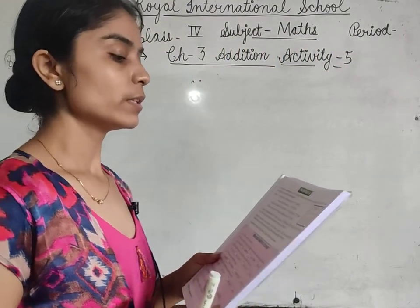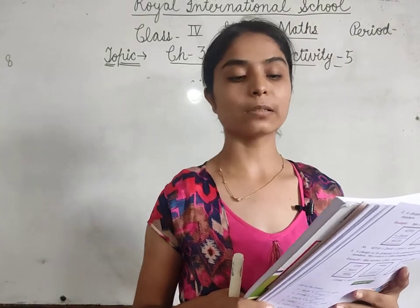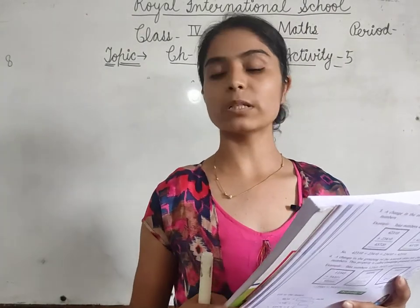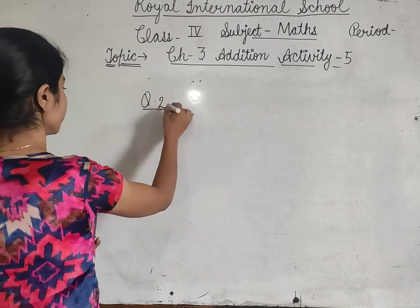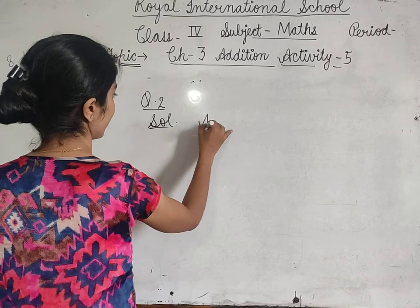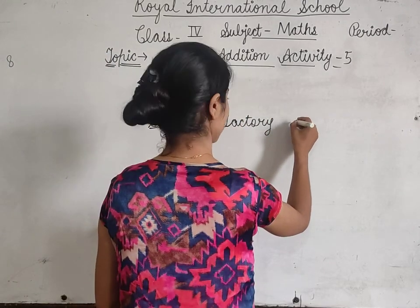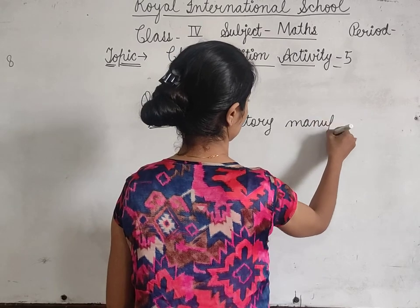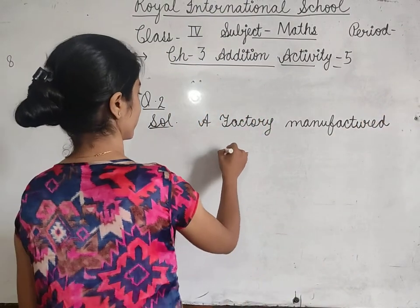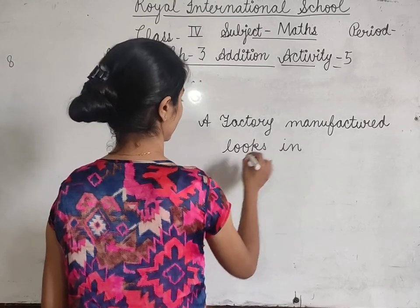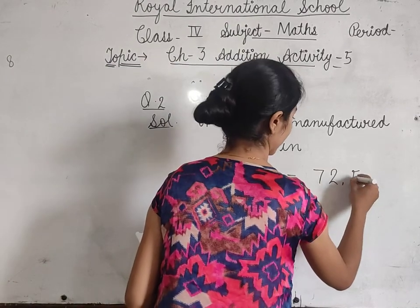Question number 2: A factory manufactured 72,584 locks in 2009 and 37,846 locks in 2010. How many locks did the factory manufacture in 2 years? Solution — a factory manufactured locks in 2009 equals 72,584.